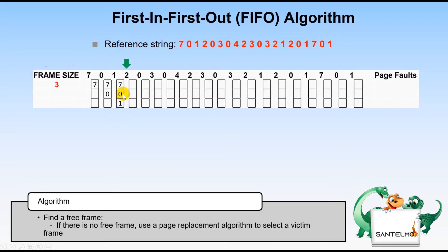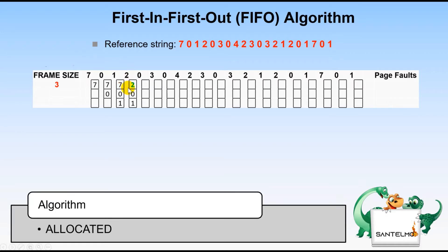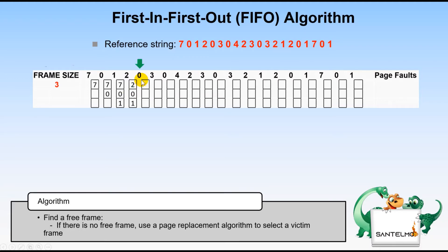Next we need to allocate 2. According to the algorithm, find a free frame — there is no free frame, so we use the page replacement algorithm to select the victim frame. The victim frame is the first page to come in, which is 7. Therefore we replace 7 with 2, and 2 is allocated.